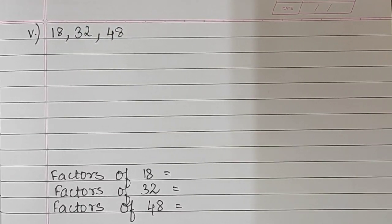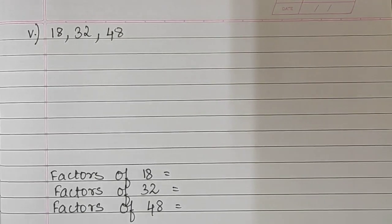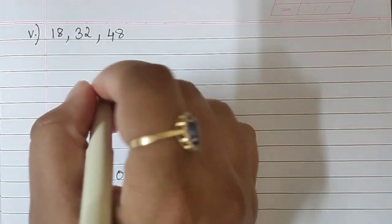Moving to sum number 5, that is 18, 32, and 48. We will find the factors of these numbers.